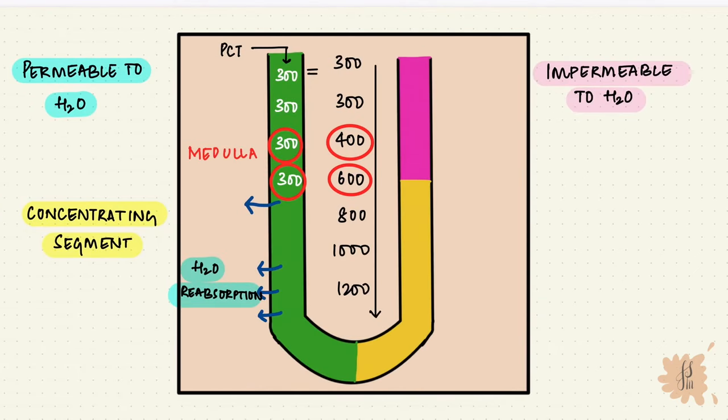So like I said, this portion of the nephron is impermeable to water. So the whole time, it's only solutes that are getting reabsorbed, which means the urine is getting less concentrated and more dilute as it goes up towards the distal convoluted tubule.